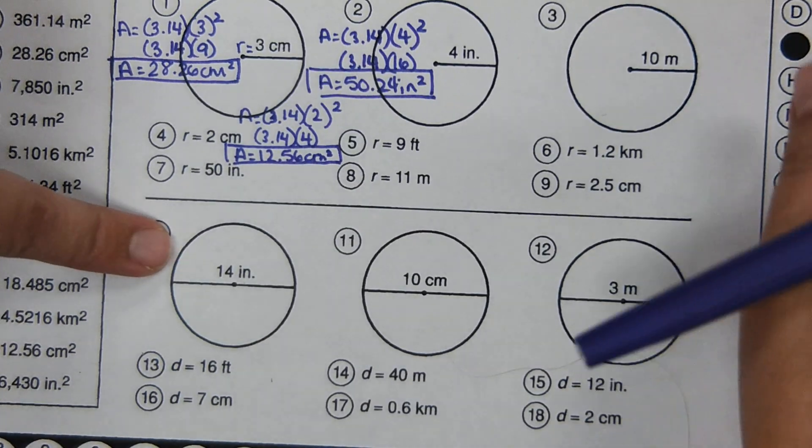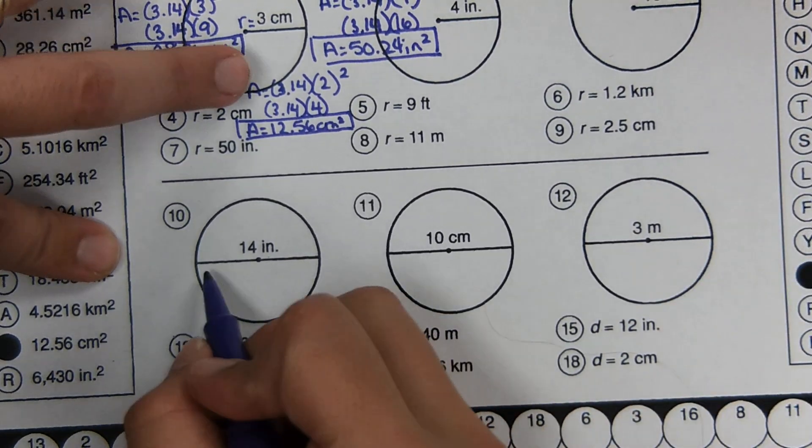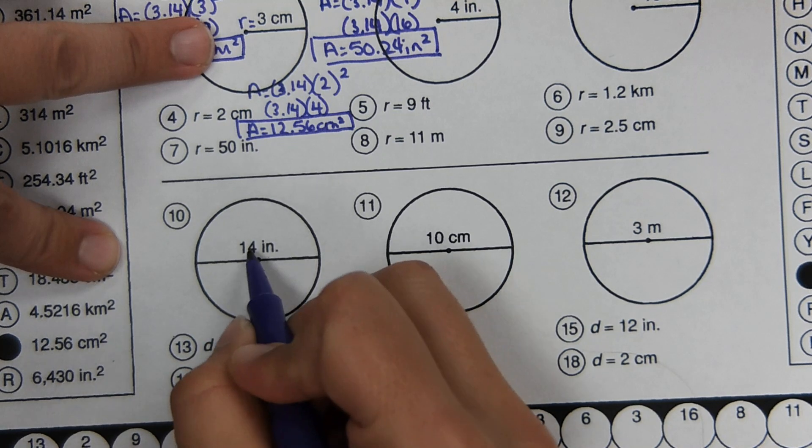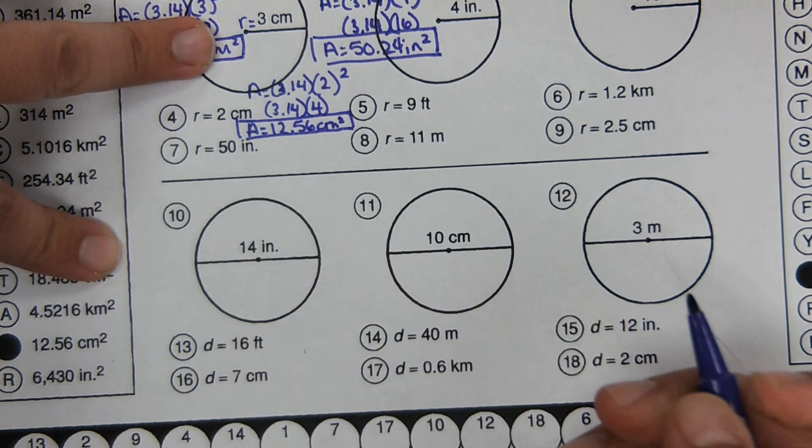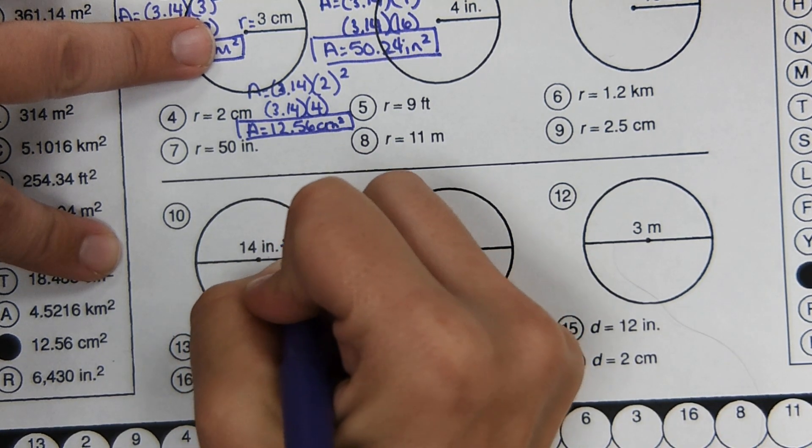On the bottom portion, it gives you diameter. So diameter is all the way across. And the way we go from diameter to radius is we just divide by two.